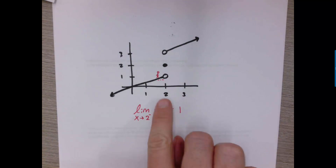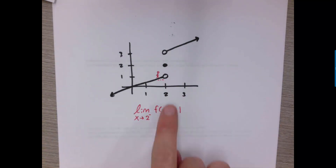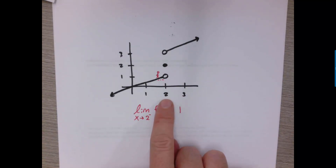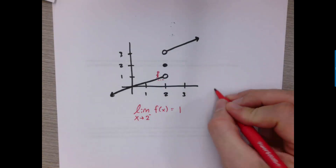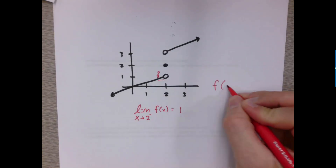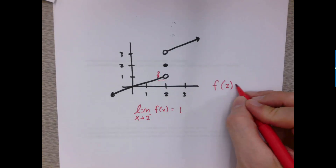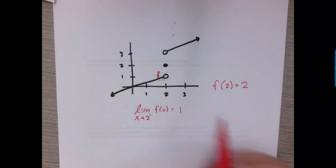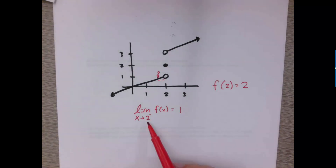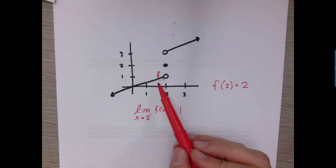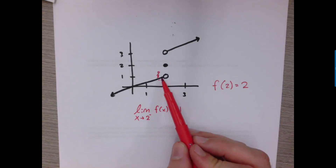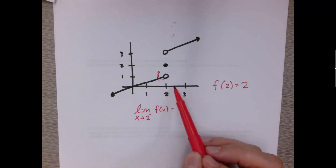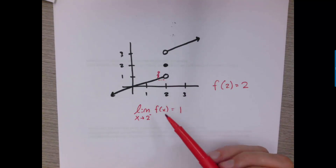Notice that this limit has nothing to do with the actual value of the function at x equals 2. Because if we want to know what is the value of the function at 2, the answer is 2 — it's this point right here. So the limit of a function is only about where the y values are headed toward. It has nothing to do with what happens when you actually get there.